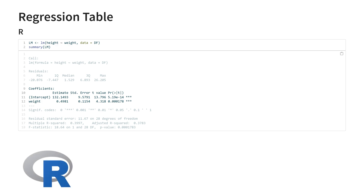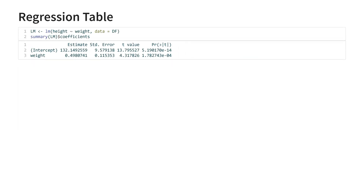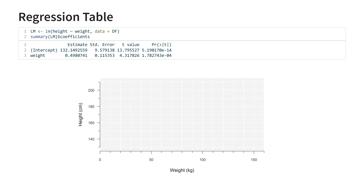I'm going to show our output in this video, but in Python you're basically looking at the same thing. To understand what we're looking at, let's draw the estimated relationship using this coefficients table. In the first row, we have the intercept, which is apparently around 132.